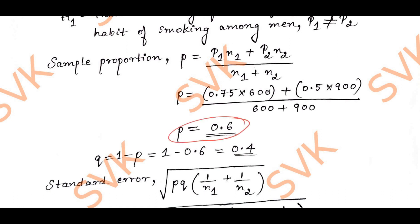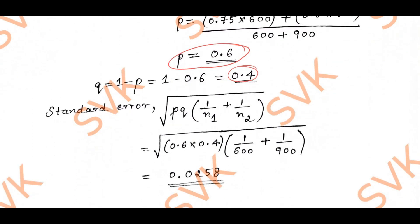Be careful while calculating these values on your calculator. After getting the value of p, find q equal to 1 minus p, giving q equal to 0.4. Then find the standard error using the formula: square root of pq times (1/n1 + 1/n2).